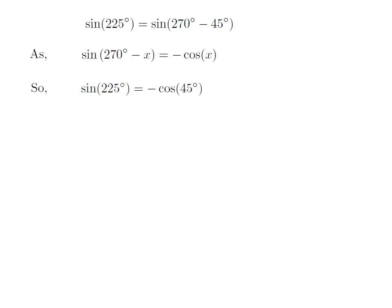Let us apply the above identity for sine of 225 degrees. Here, x is 45 degrees, so sine of 225 degrees is equal to minus cosine of 45 degrees.